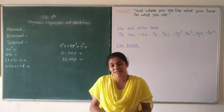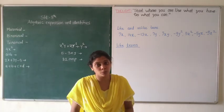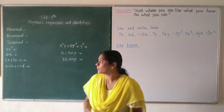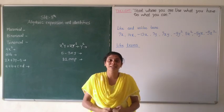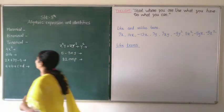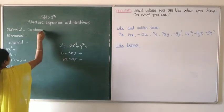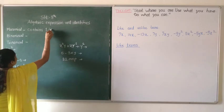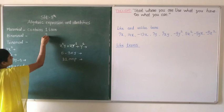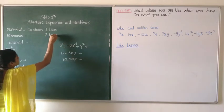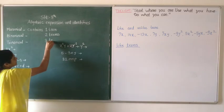An expression can contain one term, two terms, three terms, or more than three terms. When the given expression contains only one term, we call it a monomial — it contains one term. Binomial contains two terms, and trinomial contains three terms.